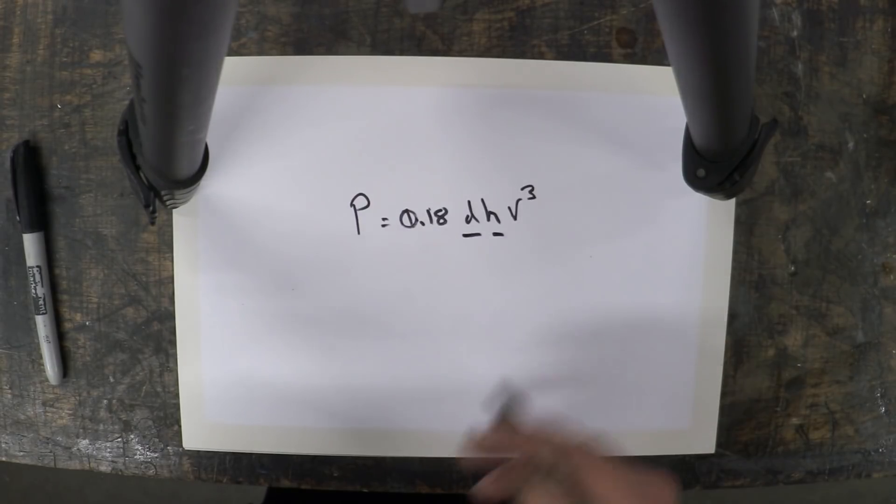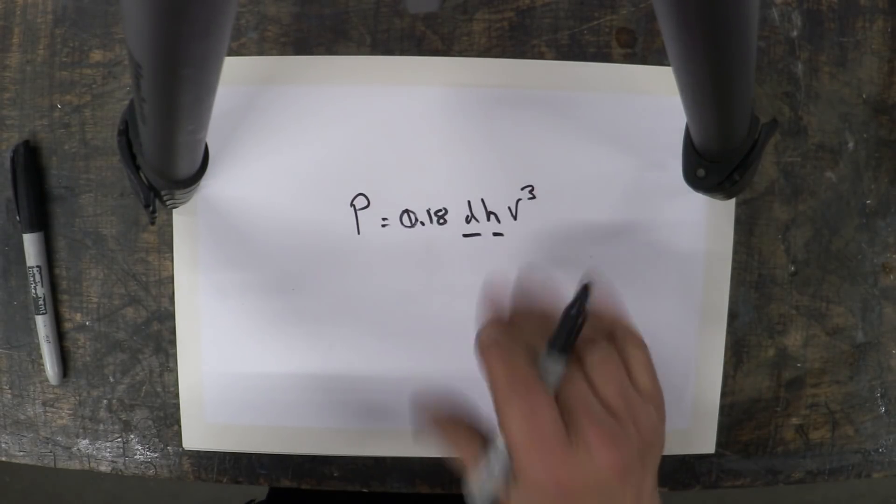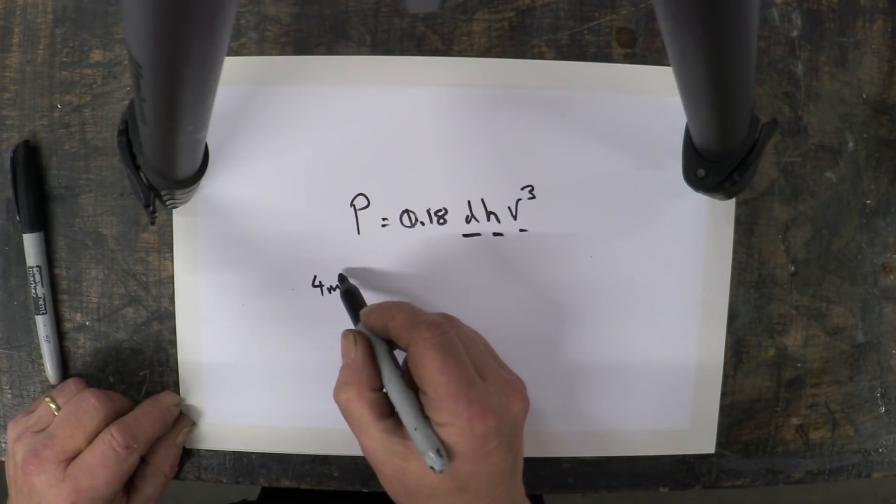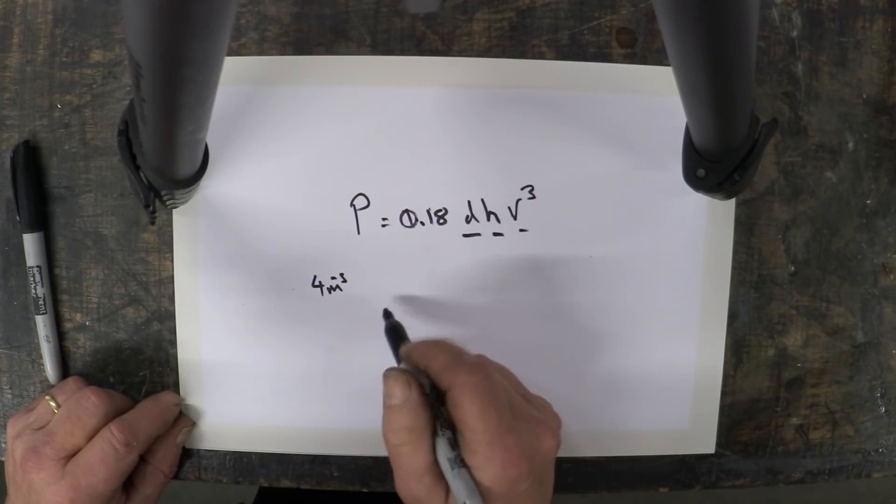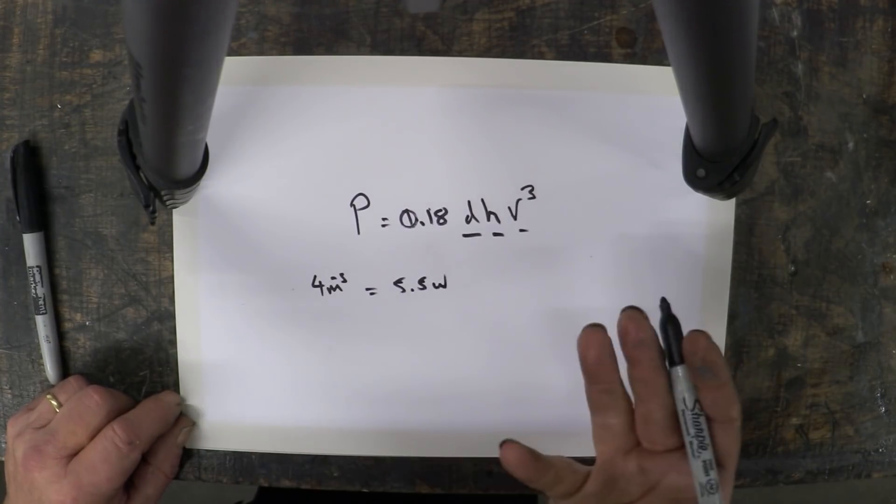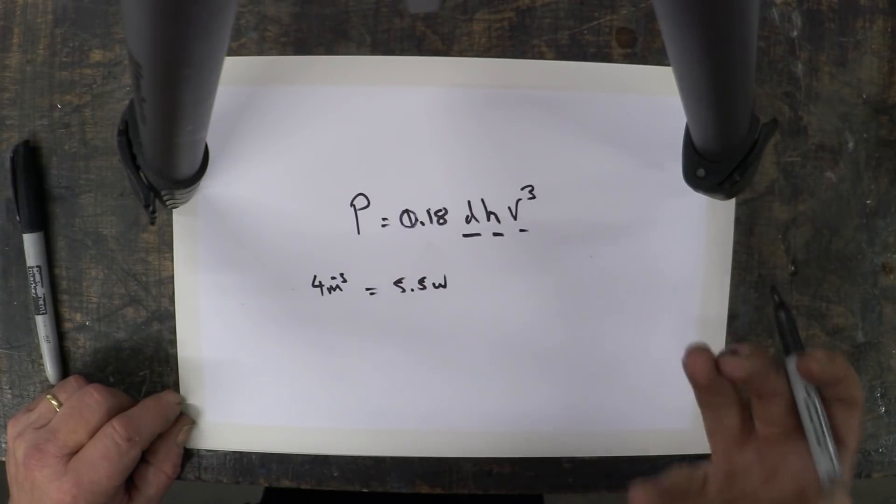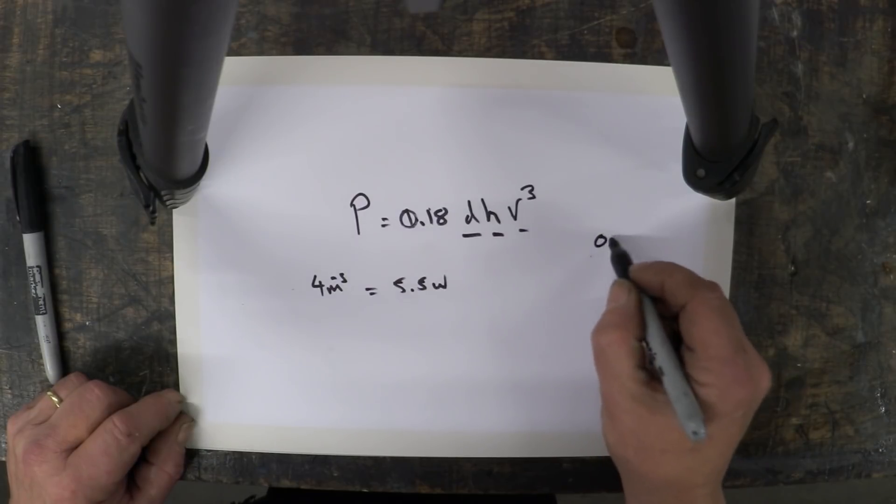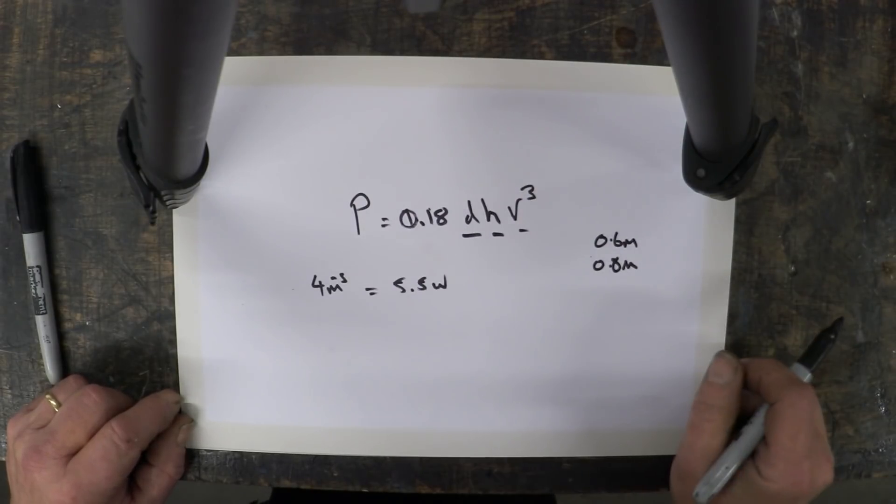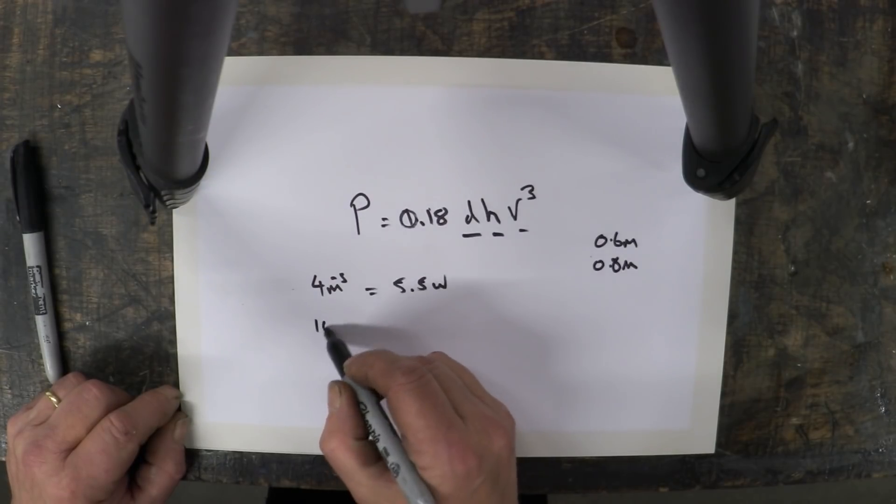If we take the wind speed at four meters per second then what we get is 5.5 watts. That's how much energy is maximum generated from that rotor that we're using. Remember the rotor is 0.6 meters by 0.8 meters, it's 0.6 meters high and 0.8 meters across on the diameter. Then we get at 10 meters per second 86.4 watts, and at 25 meters per second we get 1.35 kilowatts.